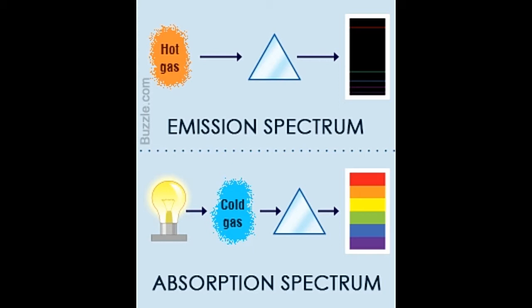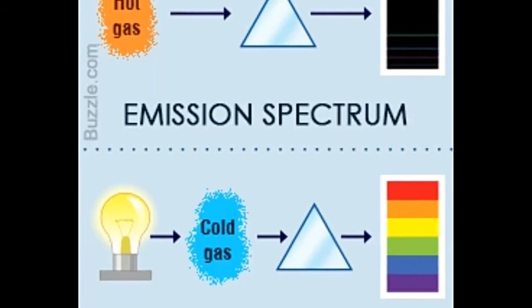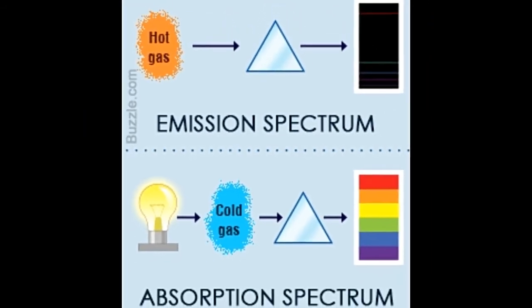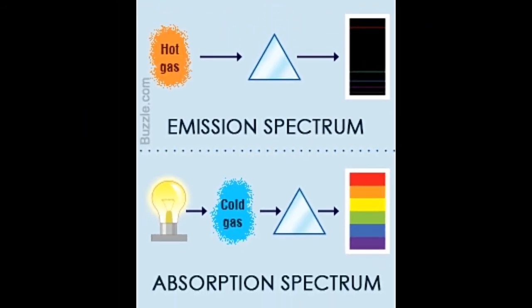Other types of radiation include radio waves, gamma rays, x-rays, and so on. The other types of spectra are energy spectrum, mass spectrum, frequency spectrum, etc. The important types of spectra generally mentioned in this context are emission spectrum and absorption spectrum.